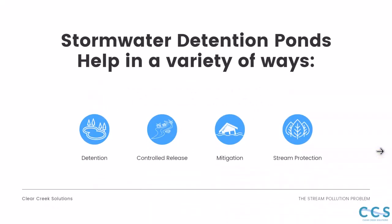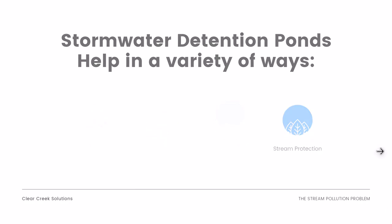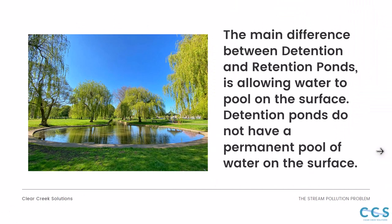Stormwater detention ponds and retention ponds help in a variety of ways. They can detain the stormwater, control the release rate of that stormwater back into the natural environment, mitigate and protect against flooding, and protect our streams from erosive flow ranges and sedimentation. The main difference between detention and retention ponds is that detention ponds do not have a permanent pool of water on the surface, while retention ponds have a permanent pool of water. Detention accepts stormwater and eventually releases it back into the natural environment.